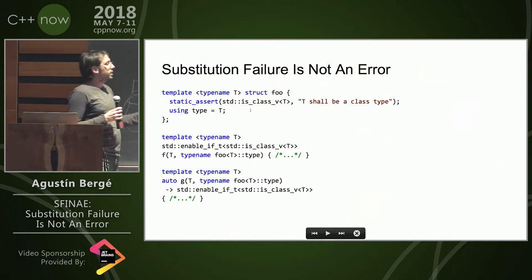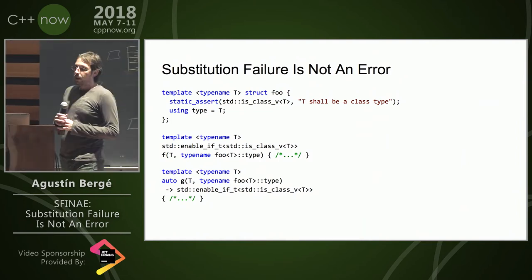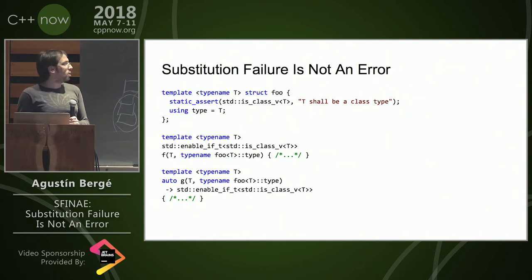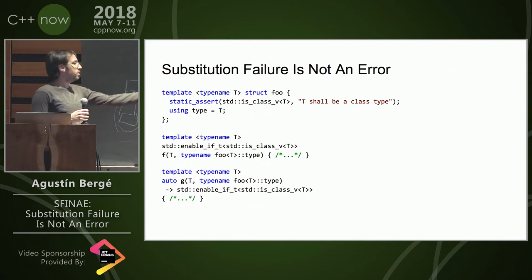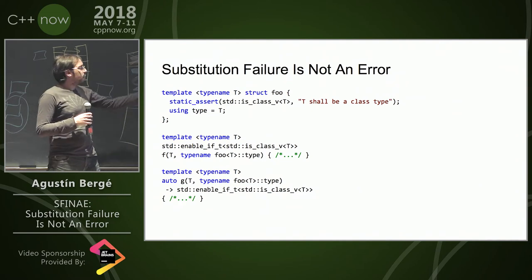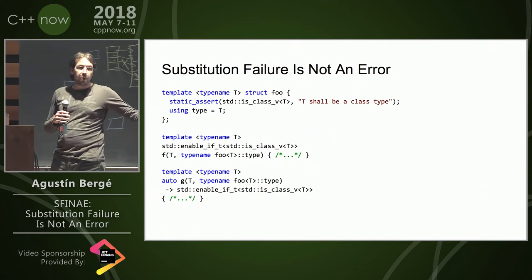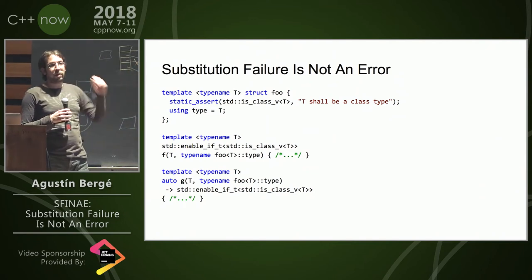One thing about this function, the non-SFINAE-friendly one, is that it prevents us from calling other functions, at least other functions called g with two parameters. Because let's say we have an overload of g that takes two ints, or even an overload of g that takes a variadic number of arguments.